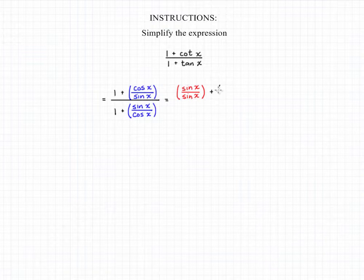So what we're going to do is convert the one in the numerator to equal sine of x over sine of x. We're not changing the value, but we're giving it the same denominator as the other term in the numerator.